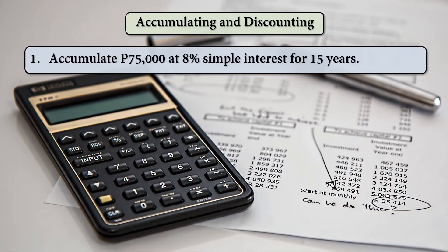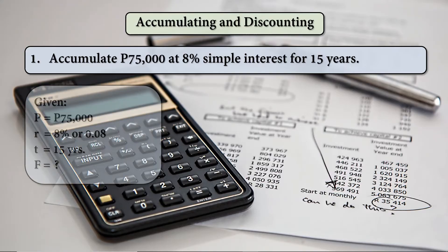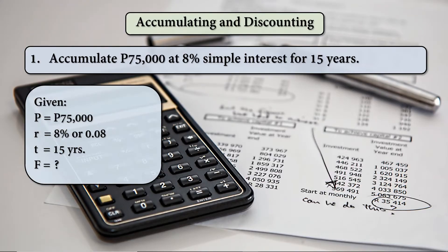For example, number one: accumulate 75,000 at 8% simple interest for 15 years. Accumulate meaning we have to find the value of F. So the given is P equals 75,000, R is 8% or 0.08, and T is 15 years.